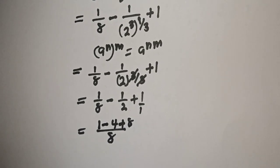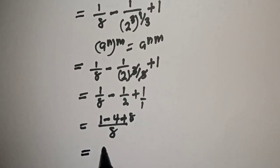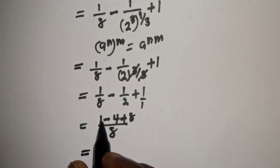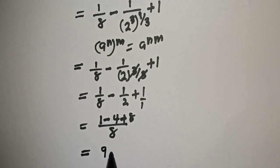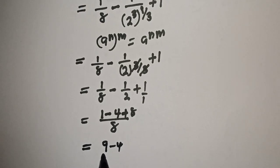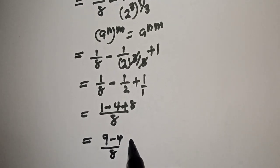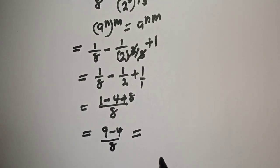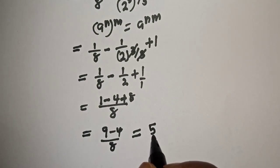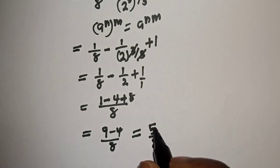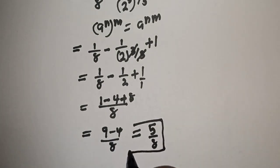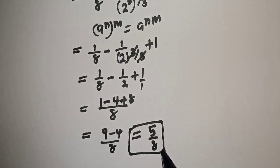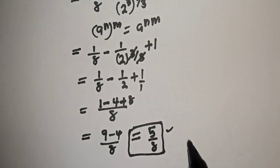This is equal to 1 minus 4 plus 8, over 8, which gives us 9 minus 4 over 8, and that equals 5 over 8. This is the final answer. If you enjoyed the class, please don't forget to like, share, comment, and subscribe.